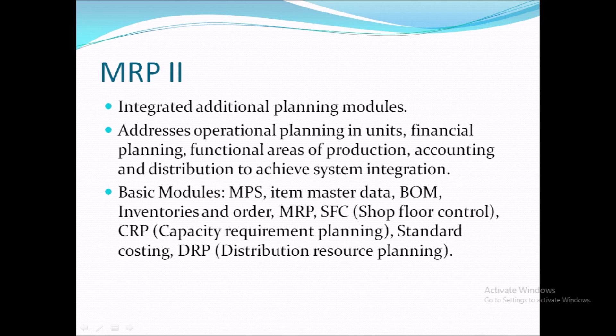Fifth is MRP — Material Requirement Planning — which we have already discussed. Sixth is SFC — Shop Floor Control — where operations are carried out and what kind of controlling mechanisms you need. Seventh is CRP — Capacity Requirement Planning — for example, if you need to produce 100 units but can only produce 50 per day, how much capacity is available and how do you use it. Eighth is Standard Costing — what kind of costing applies to each material and how it relates to your selling price. Ninth is DRP — Distribution Resource Planning — covering distributors, transportation medium, and which medium is most cost-effective and suitable.